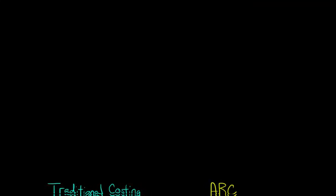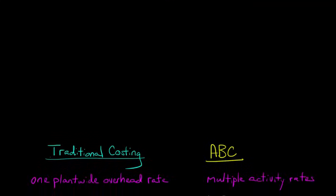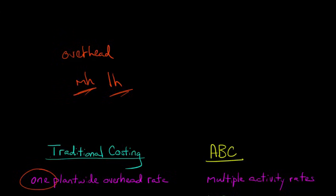Probably the most fundamental and noticeable difference between these two methods is that with traditional cost accounting, we're going to have one plant-wide overhead rate that's calculated using something like machine hours or labor hours. We take whatever the overhead is for the plant, divide it by the number of machine hours or labor hours, and that gives us one plant-wide overhead rate that we apply throughout the year.